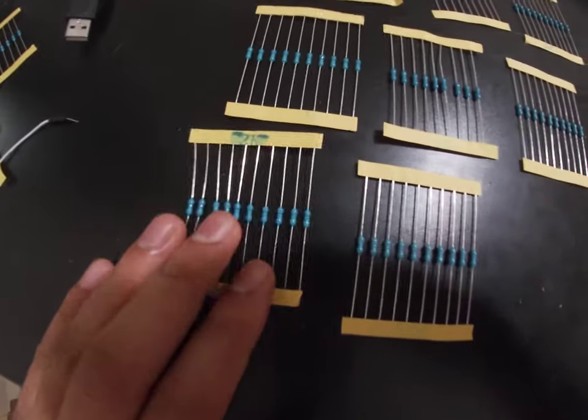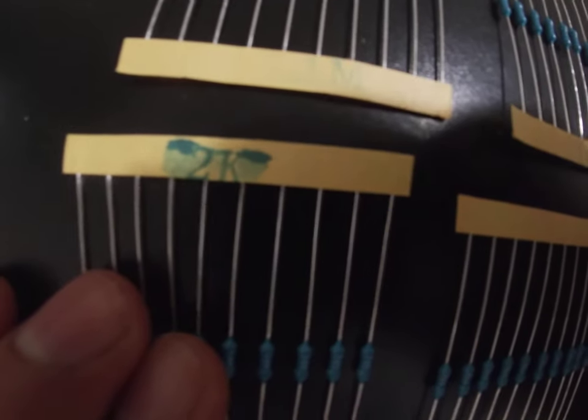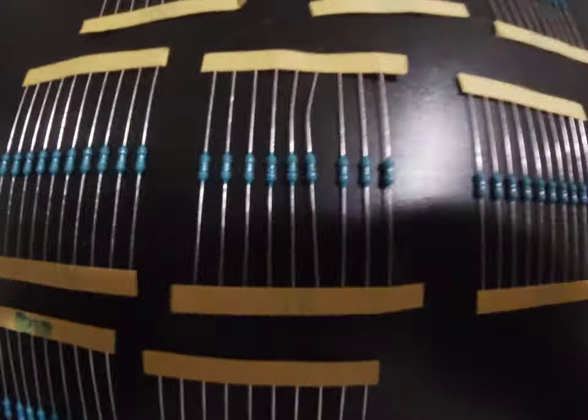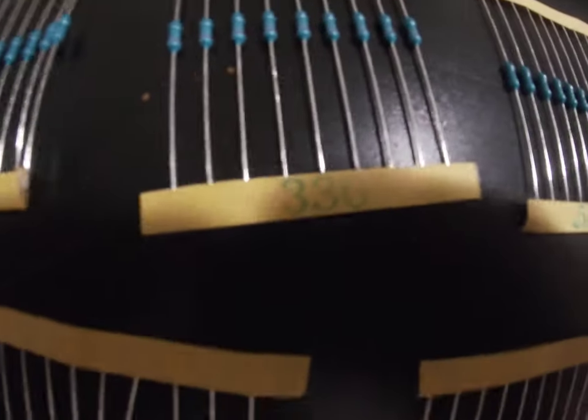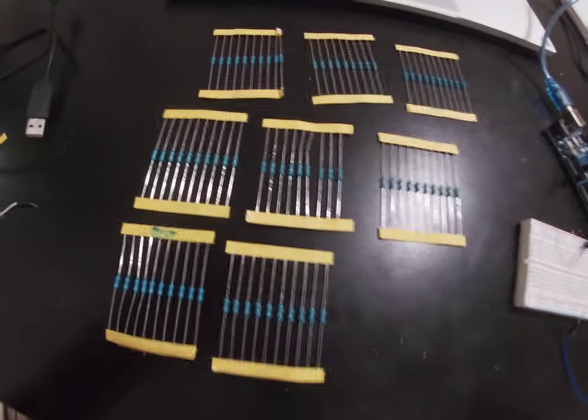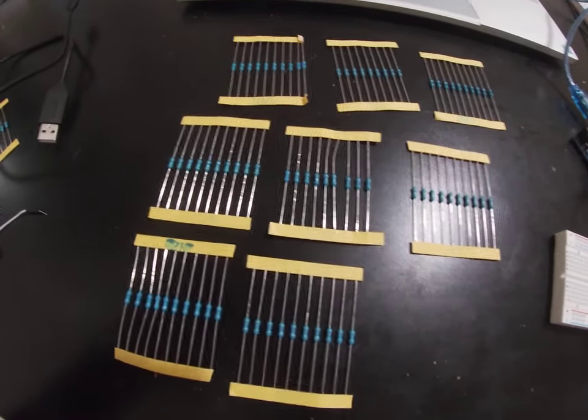For example, these resistors over here are of 2k ohms, and then you can see the measurements 1k ohm, 330 ohms, and so on and so forth.